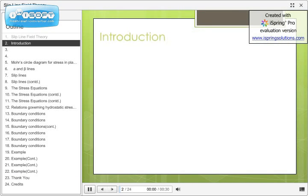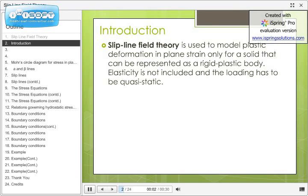So let us now introduce the concept of Slipline Field Theory. Slipline Field Theory is used to model plastic deformation in plane strain only for a solid that can be represented as a rigid plastic model. Elasticity is not included and the loading has to be quasi-static.